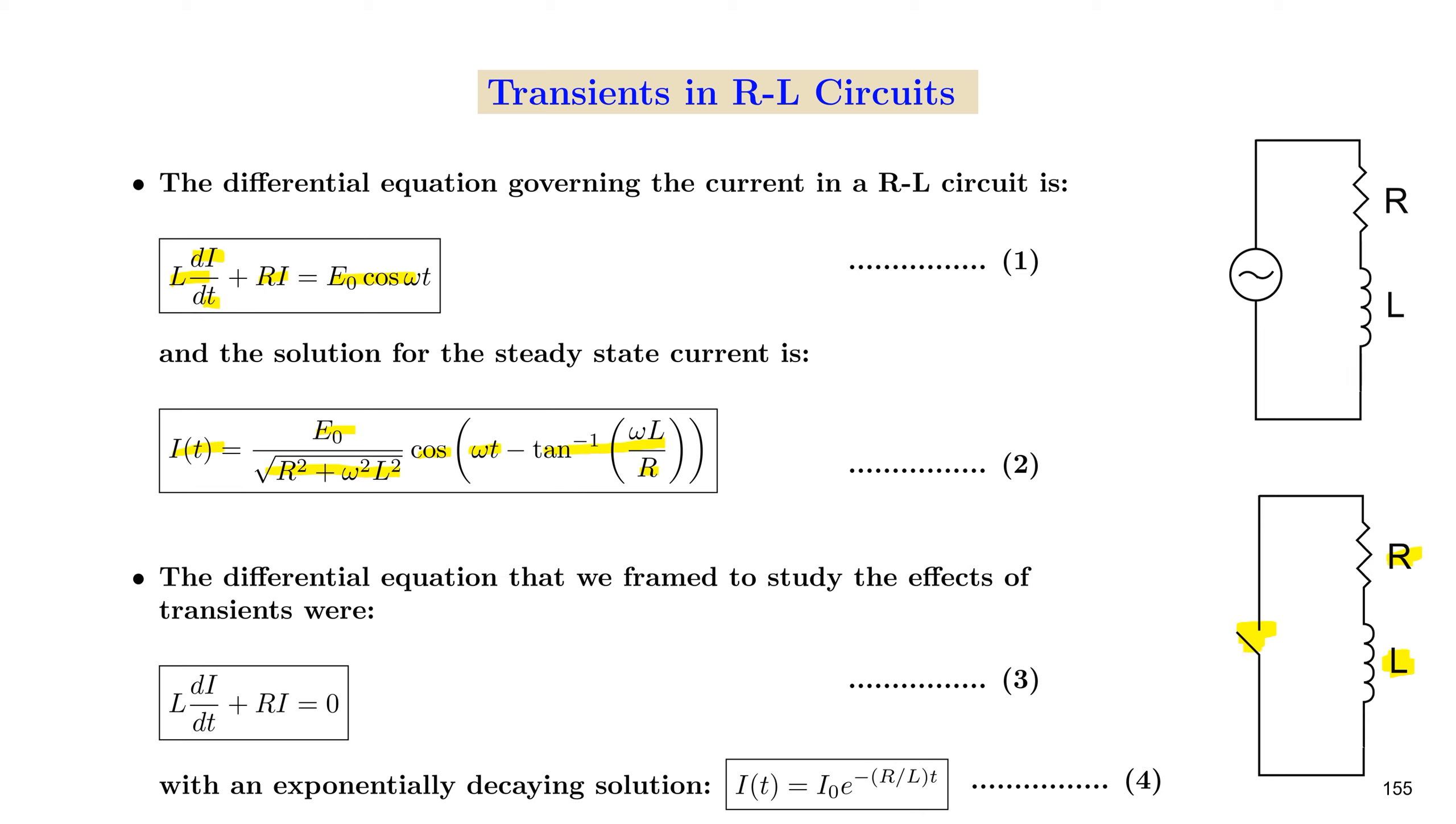As there are no impressed voltage sources, the differential equation that we framed to study the effect of transients was L(di/dt) + Ri = 0. And we got an exponentially decaying solution, I(t) = I0 e^(-R/L×t).